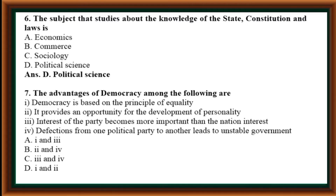The advantages of democracy among the following are: (1) Democracy is based on the principle of equality; (2) It provides an opportunity for the development of personality; (3) Interest of the party becomes more important than national interest; (4) Defections from one political party to another leads to unstable government. Options: 1 and 3, 2 and 4, 3 and 4, 1 and 2. Correct answer is Option D: 1 and 2.